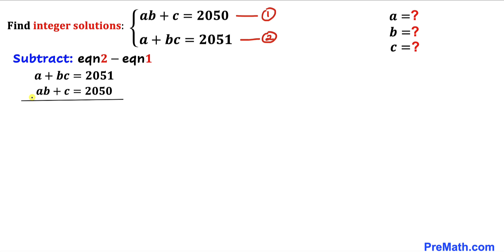Let's go ahead and subtract equation one from equation two. I have copied down equation two, and this is equation one. Let me change the sign — this becomes negative, negative, negative. So we got a − ab + bc − c, and on the right-hand side 2051 − 2050 is just going to give us 1. Now we can see a is common between the first two terms, and I'm going to bring a − c as a common factor.